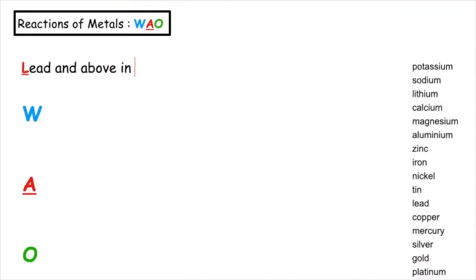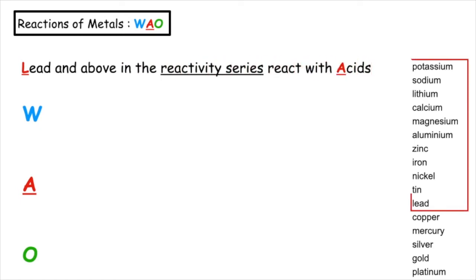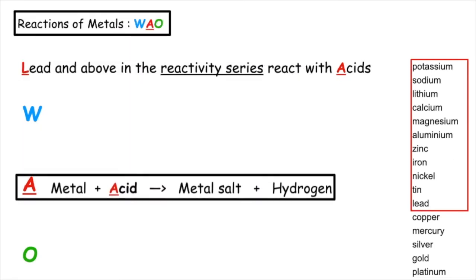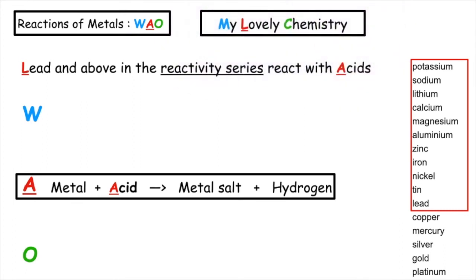Lead and above in the reactivity series react with acids. Remember, metal plus acid gives a metal salt plus hydrogen gas. A way to remember this is the mnemonic 'My Lovely Chemistry.' Magnesium and above react with water, lead and above react with acids, and copper and above react with oxygen.